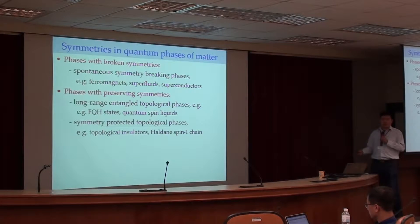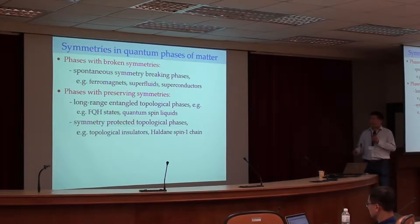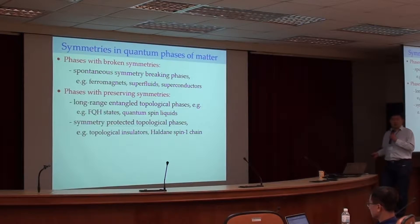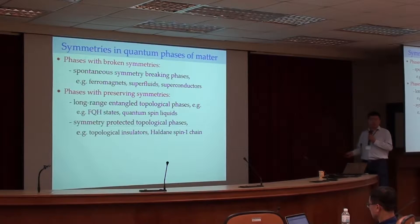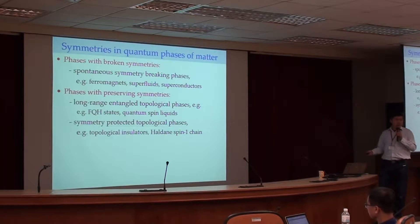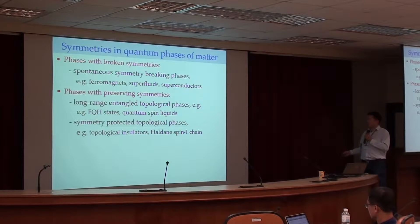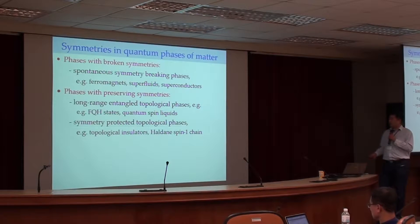There are also exotic phases with preserved symmetry, where the symmetry of the ground state is the same as the symmetry of the microscopic models. For instance, long-range entangled topological phases such as fractional quantum Hall states and quantum spin liquids - these phases do not have broken symmetries but have fractional excitations and fractional statistics with topological order. There are also, more recently, symmetry-protected topological phases such as topological insulators and Haldane spin chains.